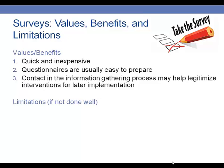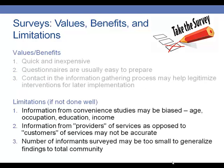The context that you make in the information gathering phase can help to legitimize your interventions for later implementation and also give you ideas of the types of questions you might want to ask as you go forward. But if surveys aren't done well, they can interfere with the kind of program evaluation that we would want to have. We need to be careful to survey as many people from our target audience as possible, rather than just subsets, since convenience studies can be biased.